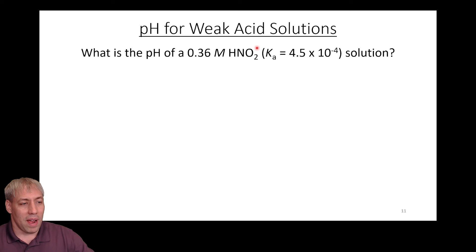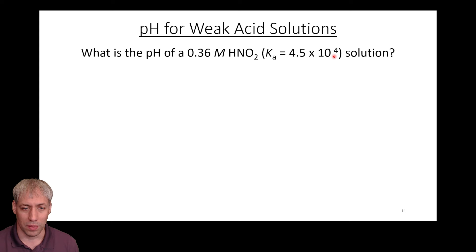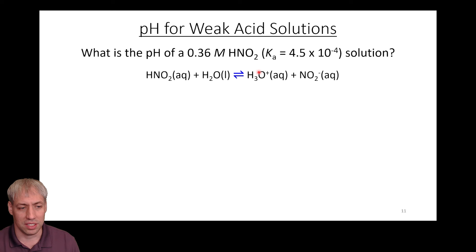We can do the math to calculate pH of weak acid solutions. With strong acids and bases we can use concentration directly, but for weak acids you can't — you have to rely on ICE tables. To find the pH of a 0.36 M HNO2 solution: HNO2 is not a strong acid, it's a weak acid with Ka = 4.5 × 10⁻⁴. That small number says it favors reactants 10,000 times more than products — so it mostly stays as HNO2, but it still generates some H3O+ and NO2-.